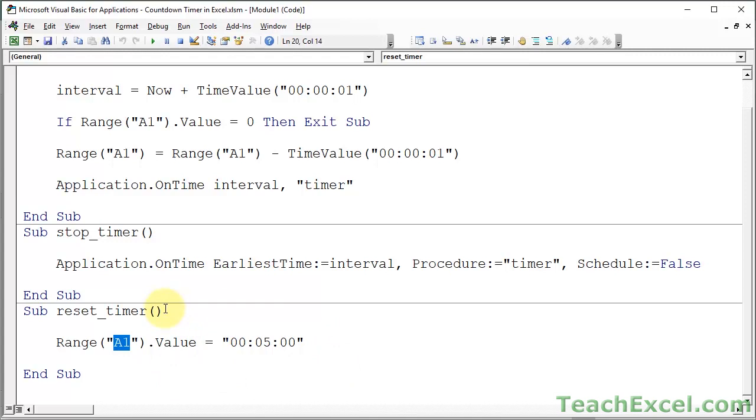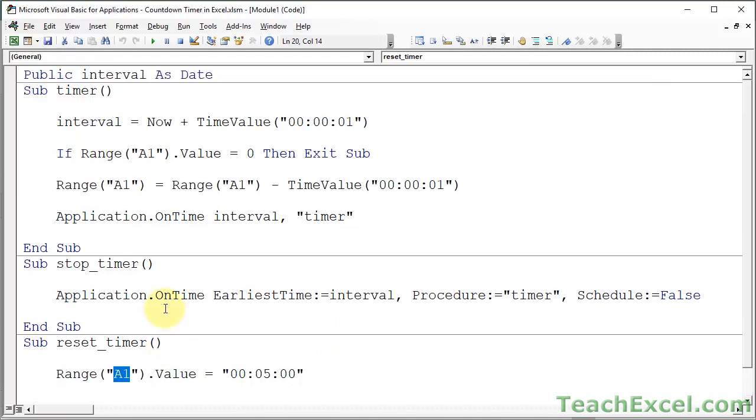So let's talk about how the actual timer macro works. Let's go up here to the timer macro. Now, there are many ways to make a timer macro, but here I try to keep it as simple as possible. There are only four lines, and this has one goal. This macro here just removes one second from the timer every second.